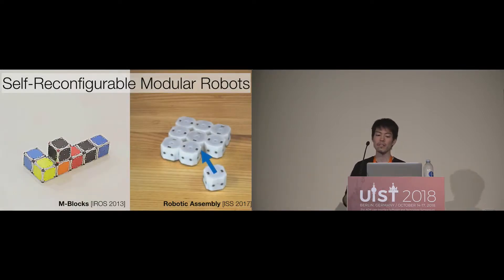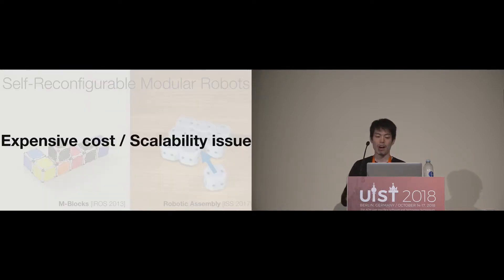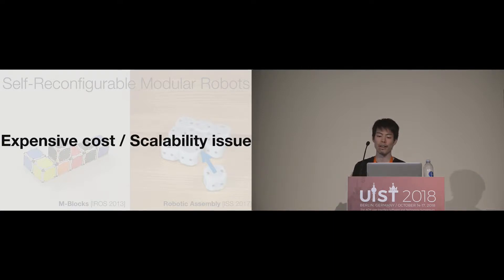Alternatively, self-configurable modular robots, like Enbrox or Zooey's, use many movable robots to construct physical 3D shapes. However, this approach introduces a scalability problem, as each module requires individual actuation, sensing, power, and communication mechanisms.